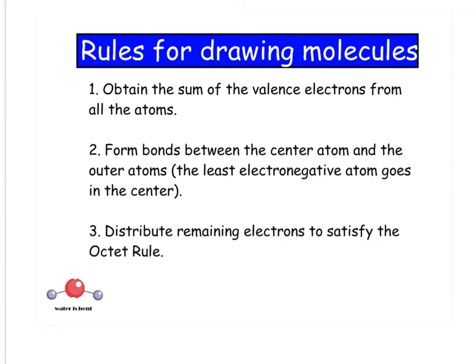Here are the rules for drawing molecules. You want to add up all your valence electrons from all the atoms in the compound. Form bonds between the center atom and the outer atoms. Then distribute the remaining electrons to satisfy the octet rule. The octet rule says everybody wants eight valence electrons so that they're like the noble gases and they're in a stable state.